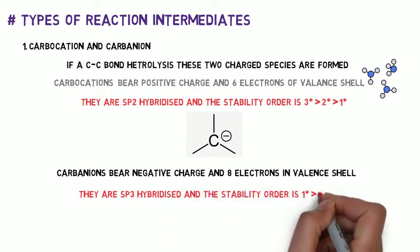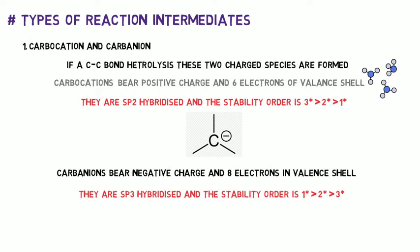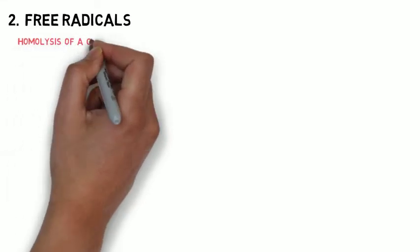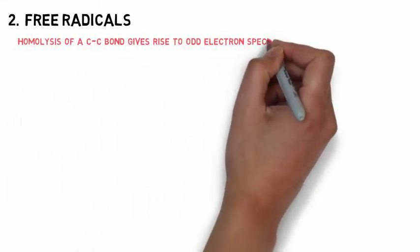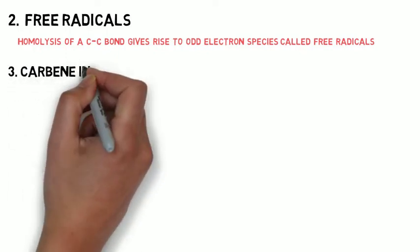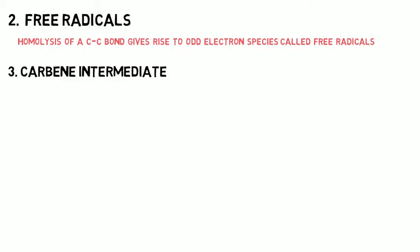The next one is free radicals. Homolysis, i.e. homolytic fission of a carbon-carbon bond, gives rise to odd electron species called free radicals. The next one is carbene intermediate.